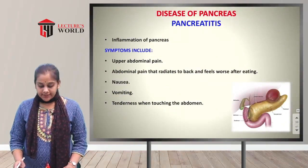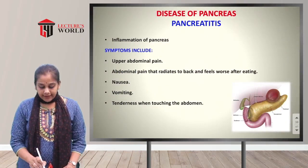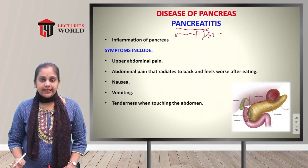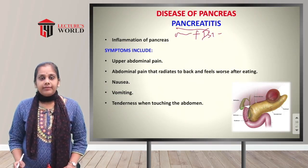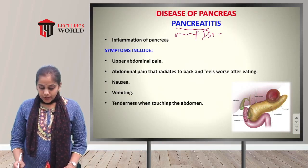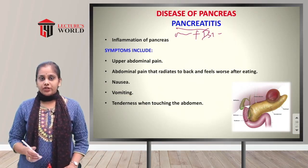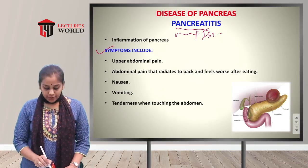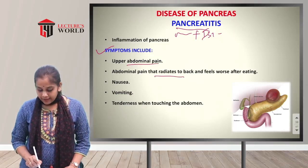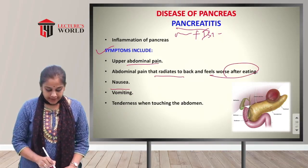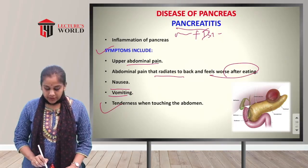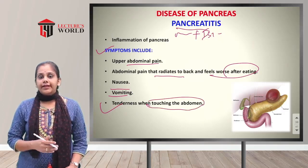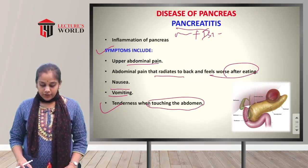Now we will see disease conditions related to the pancreas. Pancreatitis means inflammation of the pancreas. Symptoms include upper abdominal pain that radiates to the back and feels worse after eating, nausea and vomiting, and tenderness or swelling when the abdomen is touched.